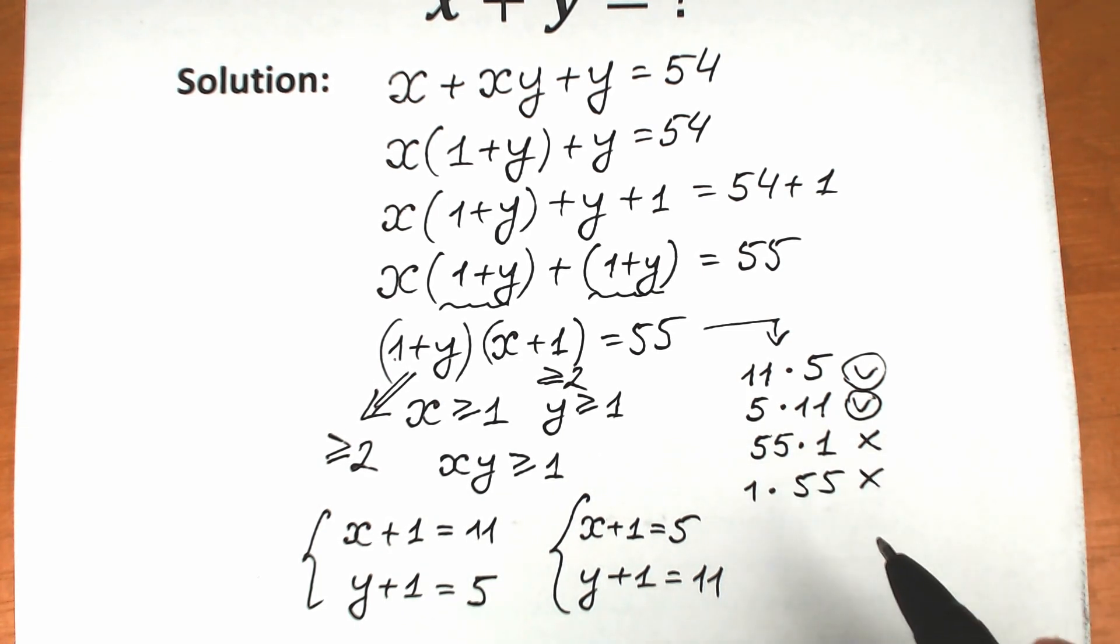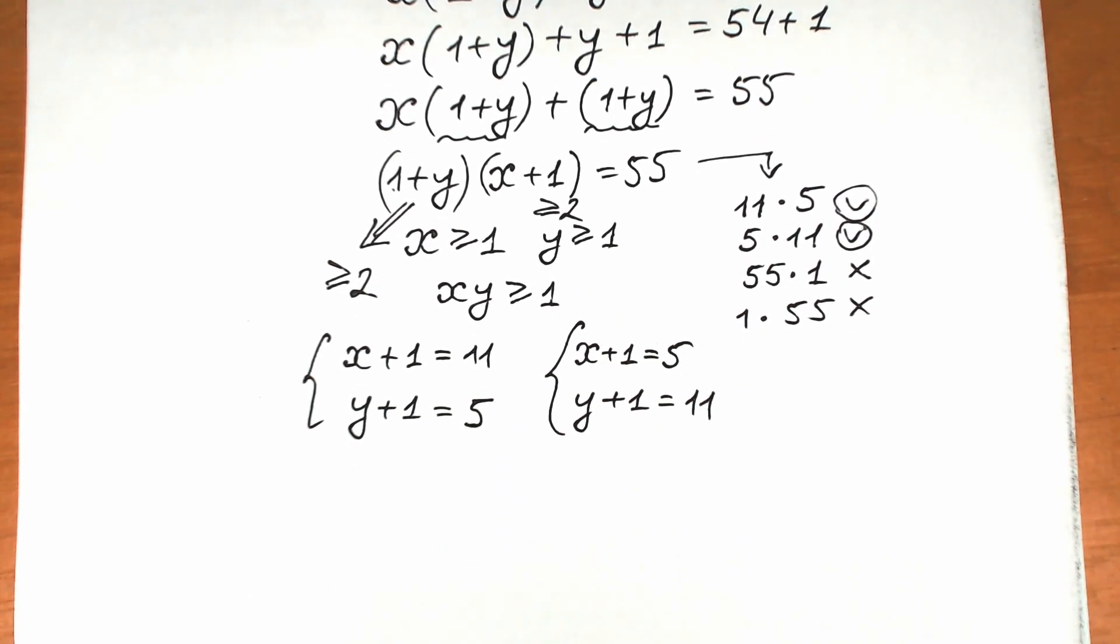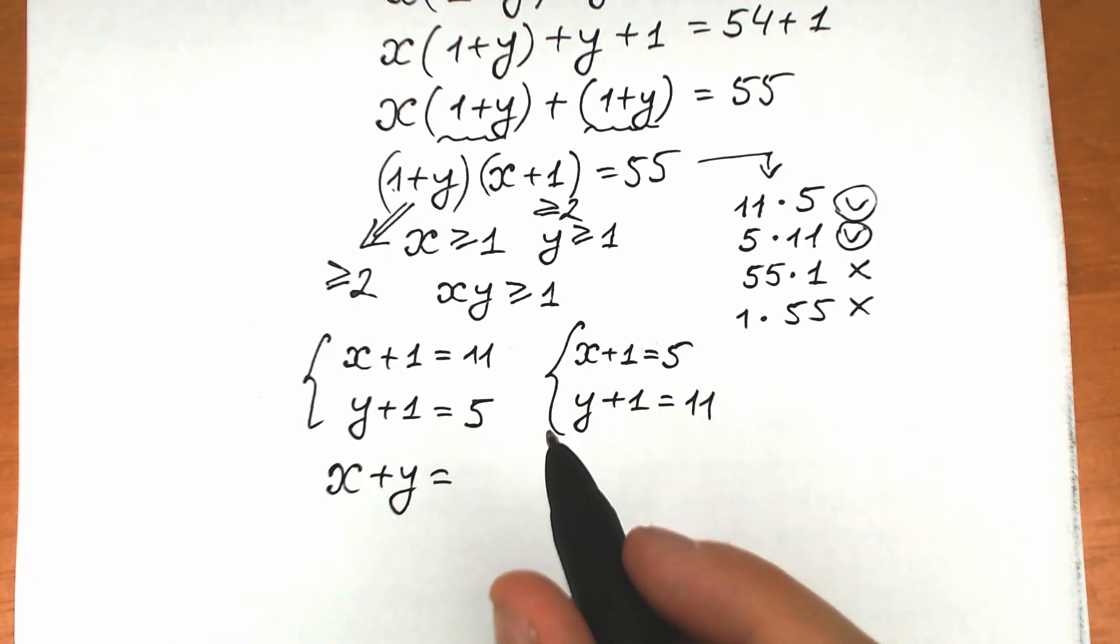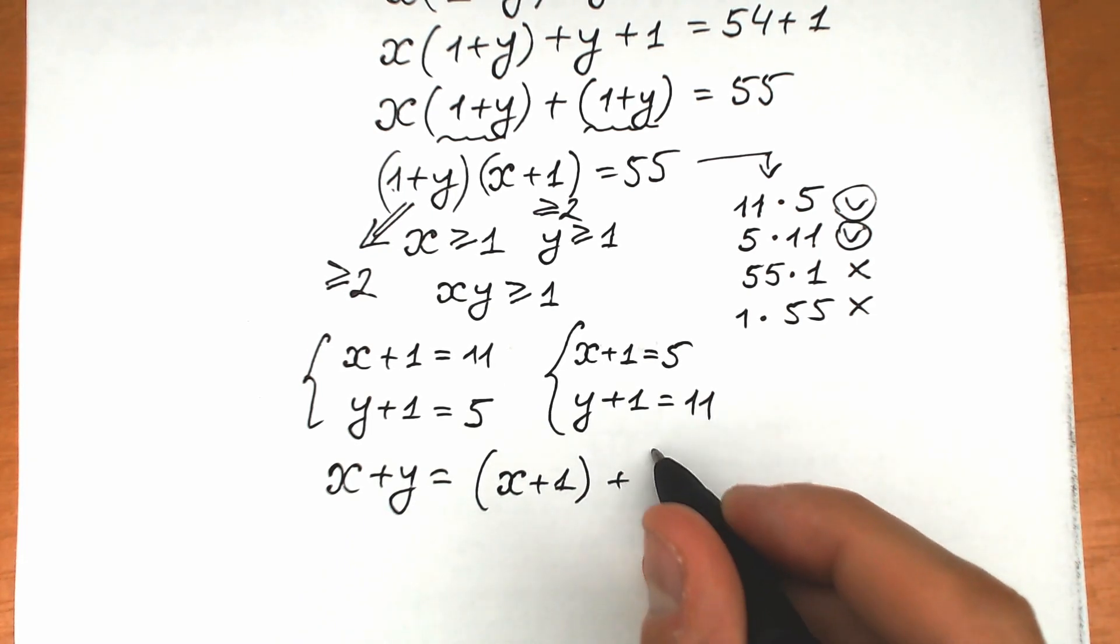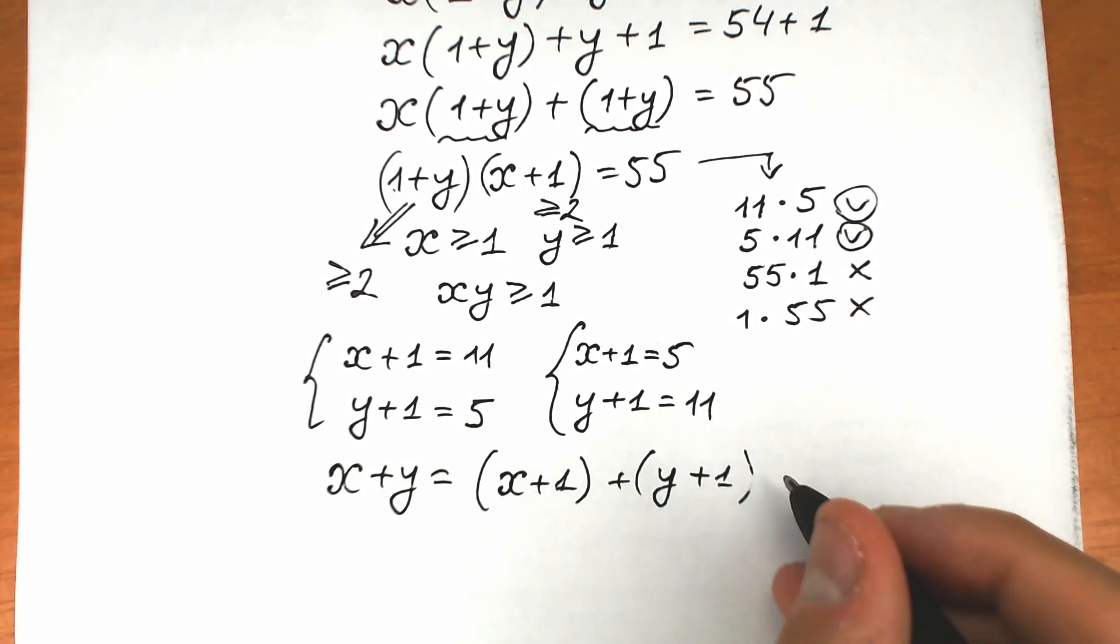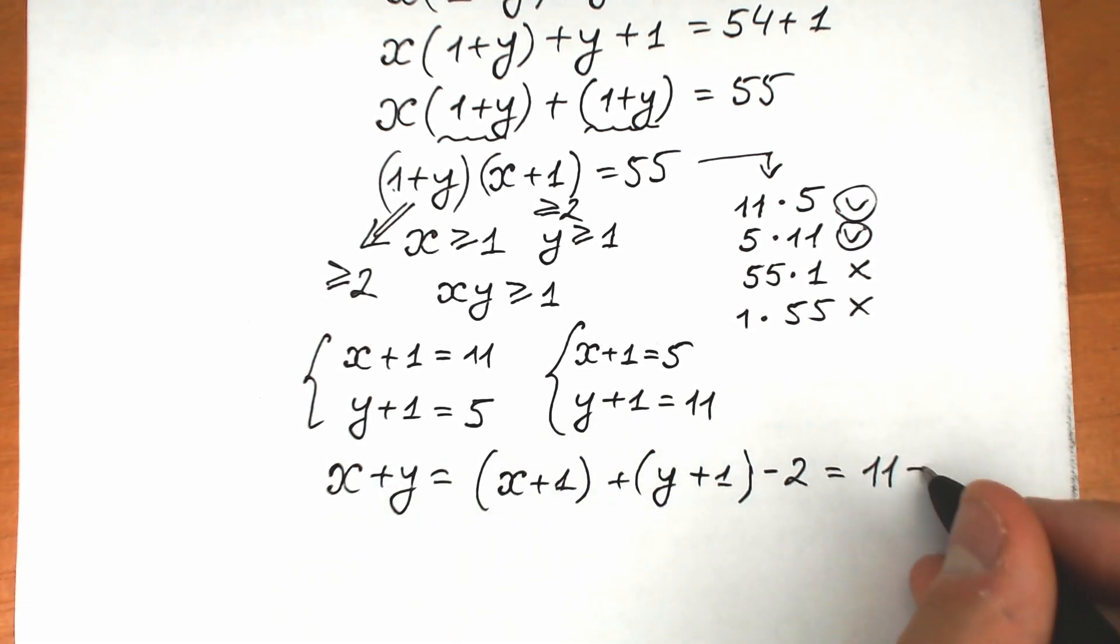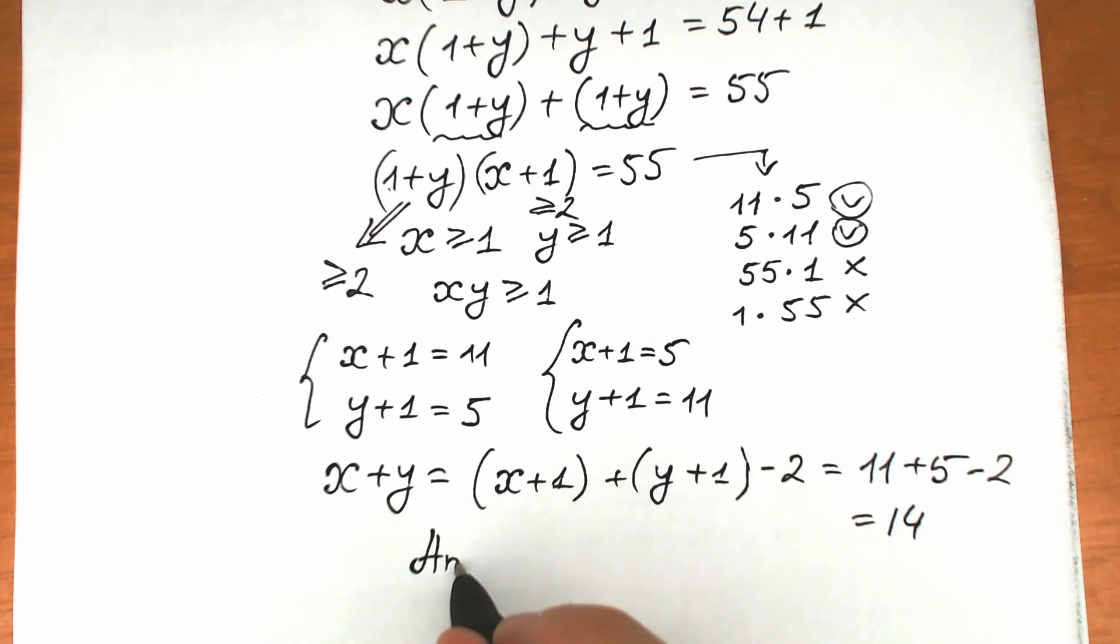Let's find our final answer. We should find x plus y. So x plus y equals x plus 1 plus y plus 1 minus 2, which gives us 11 plus 5 minus 2, equals 14. So our answer to this challenge: x plus y equals 14.